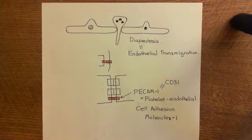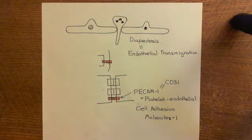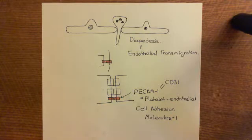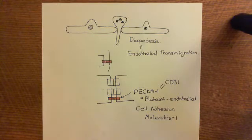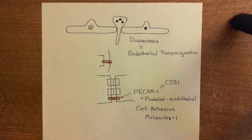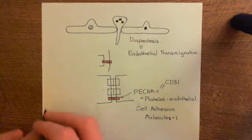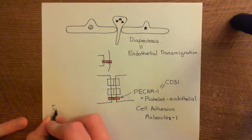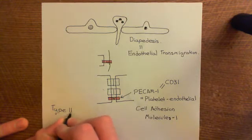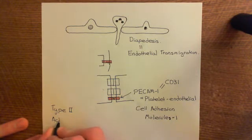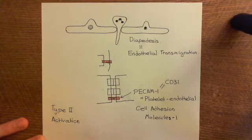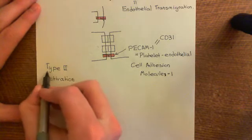Interleukin-1 and tumor necrosis factor alpha cause type 2 activation of endothelial cells, and we've discussed that this takes much longer than type 1 activation. Type 1 activation will occur within minutes, whereas type 2 activation takes much longer because all of the effects are brought about by changes in protein synthesis. One effect of type 2 activation is that you will produce even more prostacyclin, resulting in even more vasodilation of the terminal arterioles.